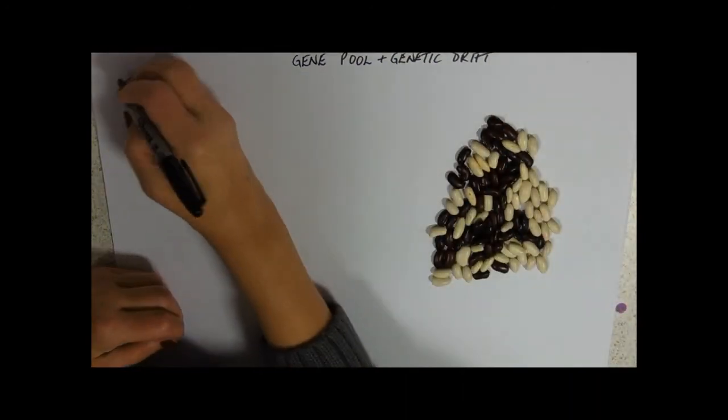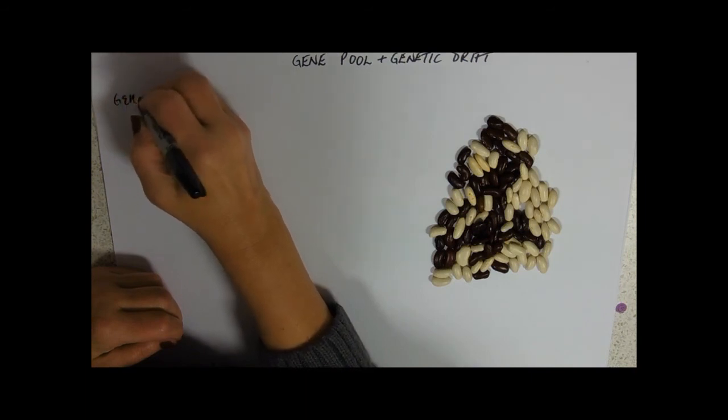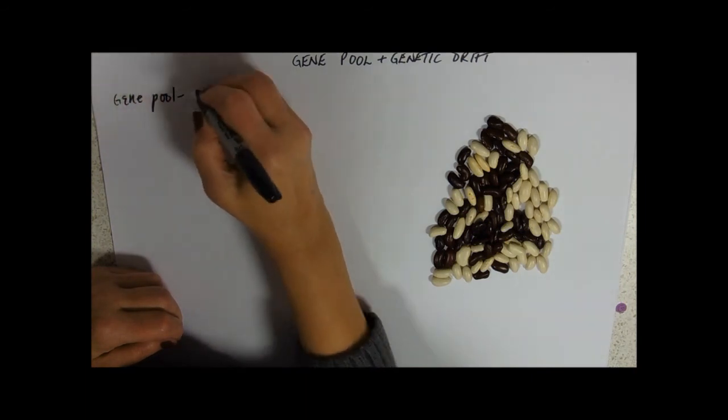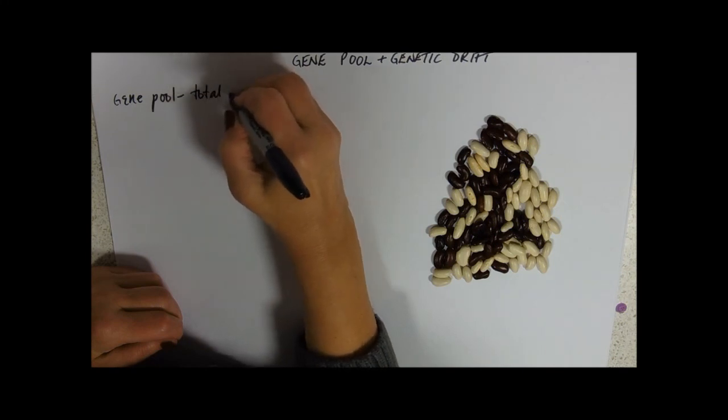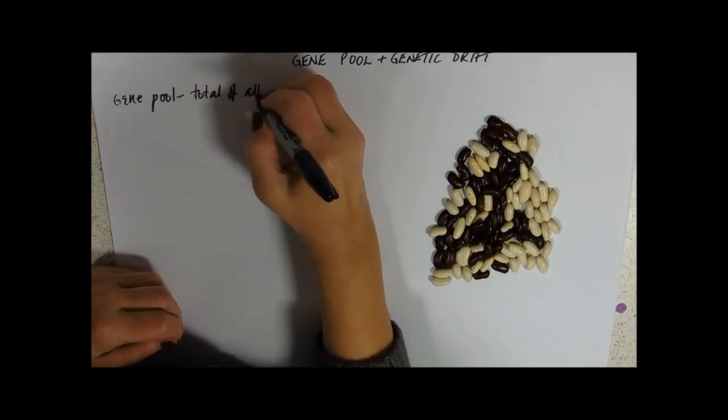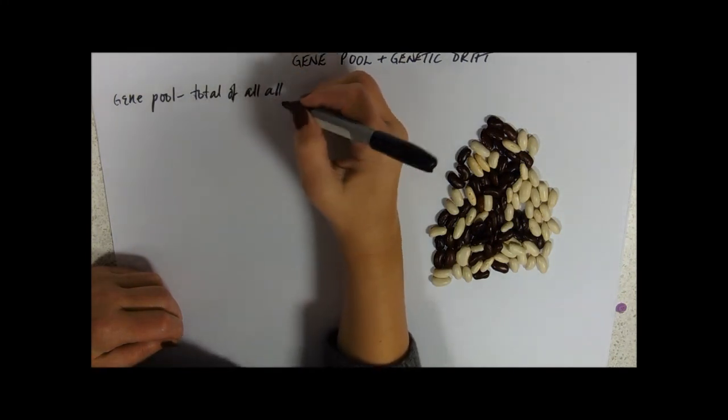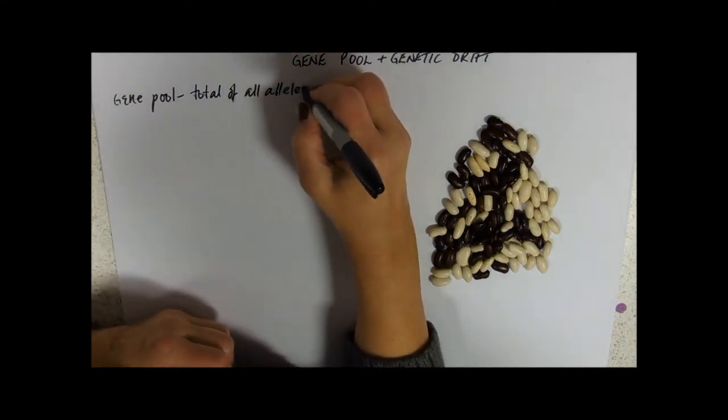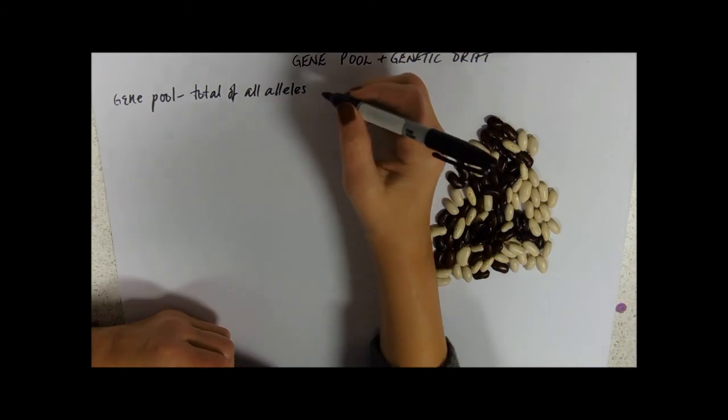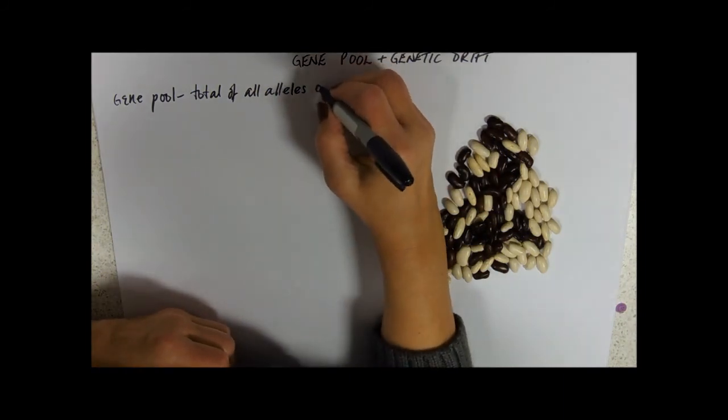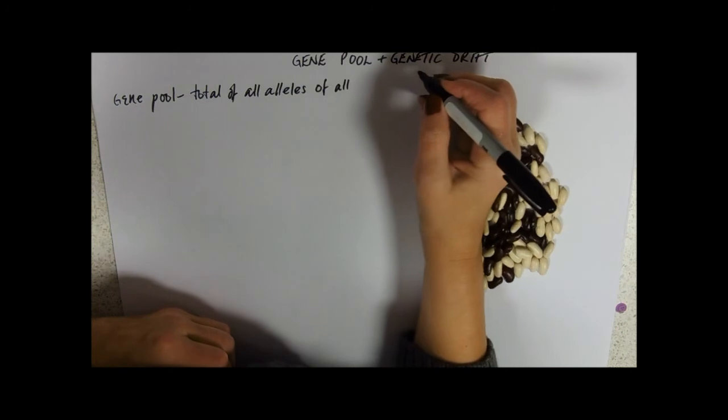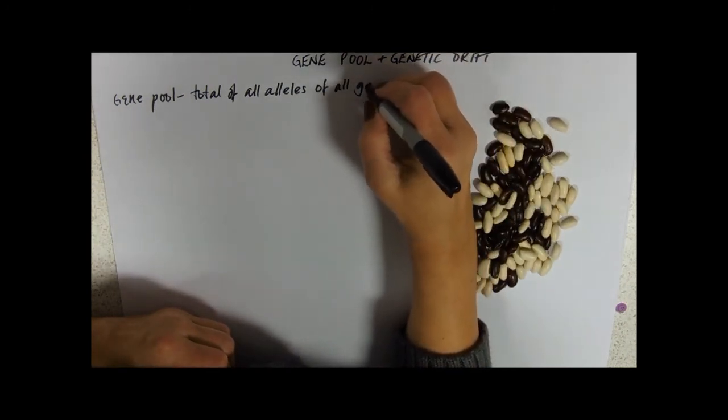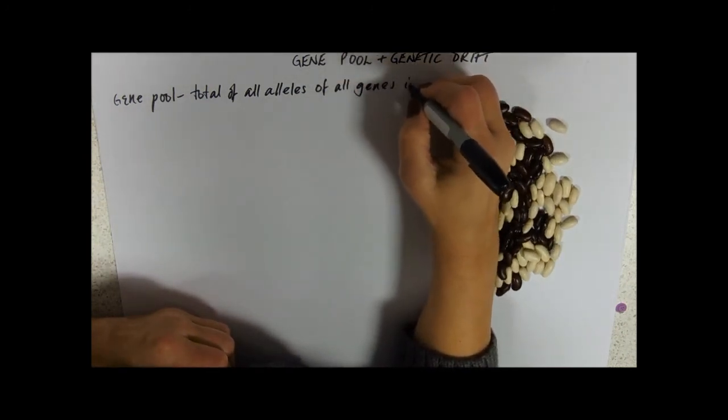So gene pool. This is the total of all alleles of all genes in a population.